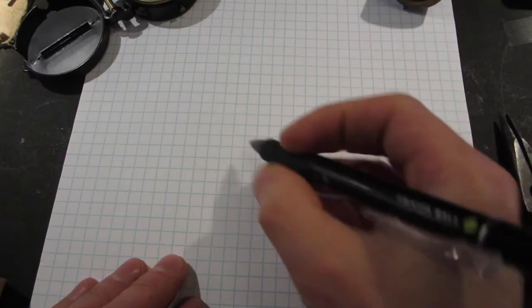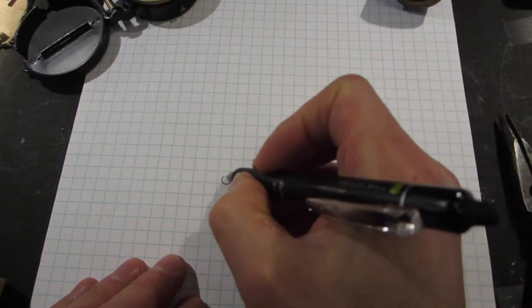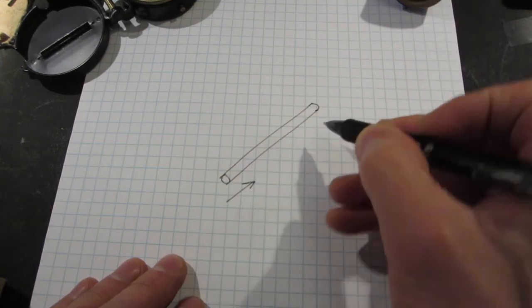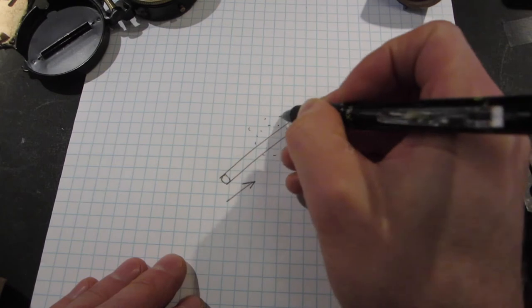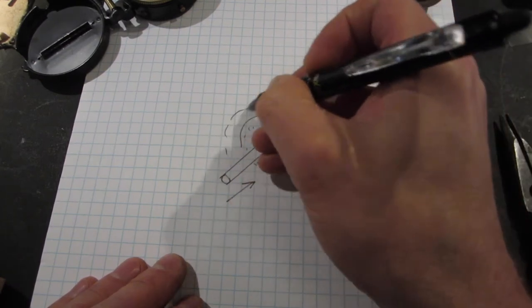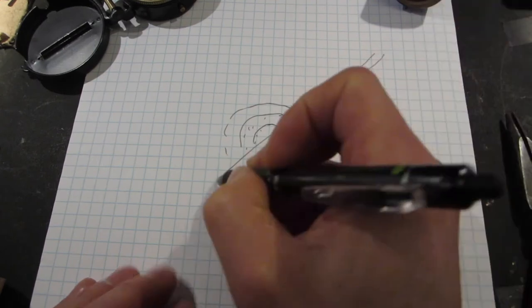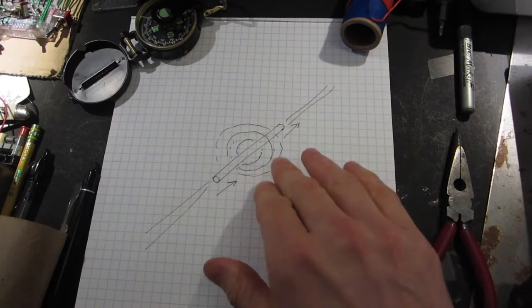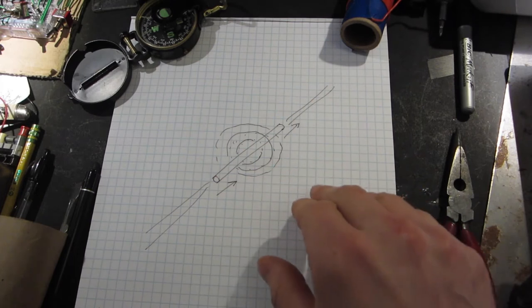And what Ørsted said is basically this. He said, if you have a wire, and you have current going through that wire, it will create what we call a magnetic field, perpendicular to the plane of that wire.